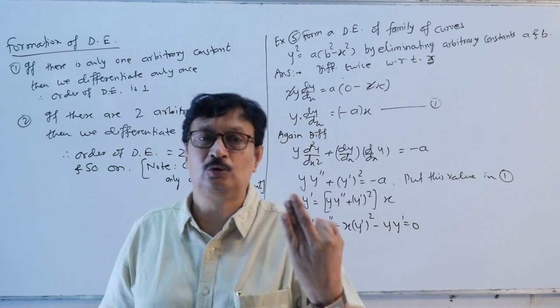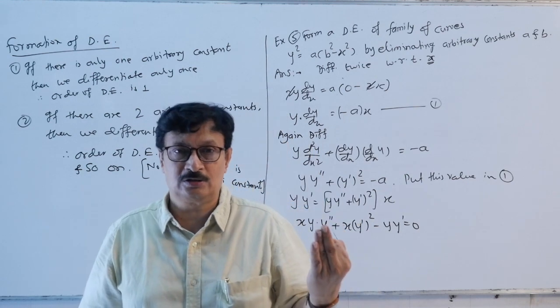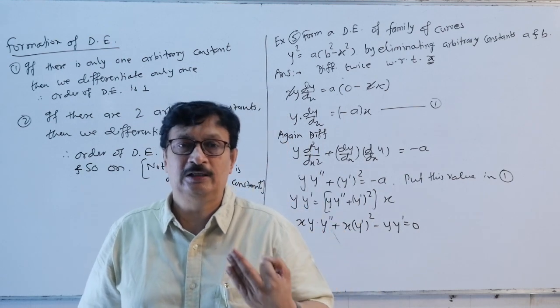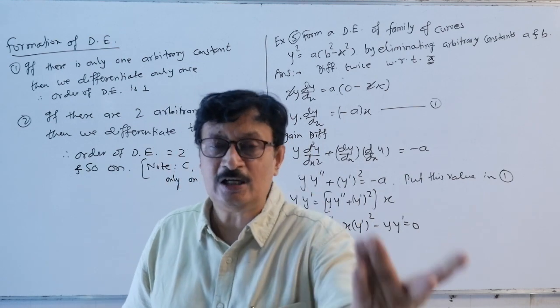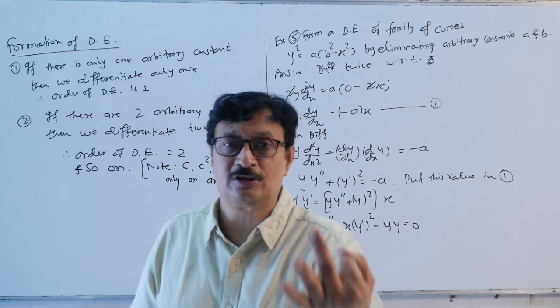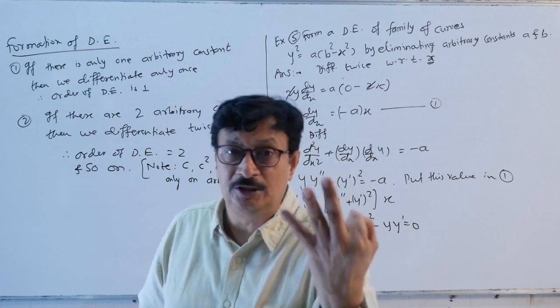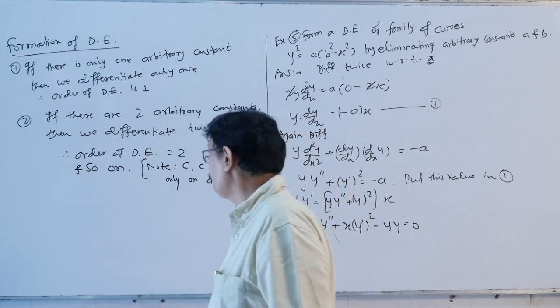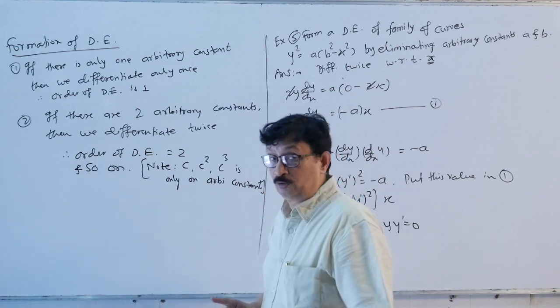For three arbitrary constants, say a, b, and c, we differentiate thrice to eliminate those arbitrary constants, and therefore the order of the differential equation will be three.